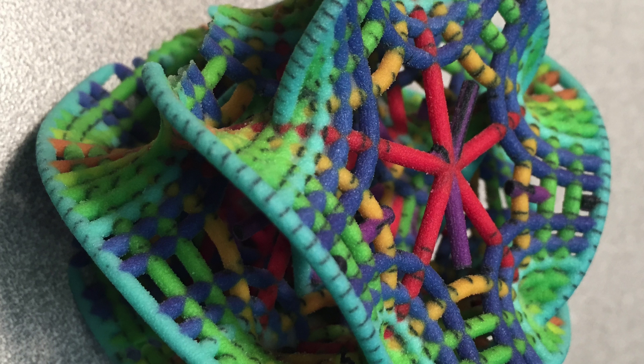So here you see a detail of the Calabi-Yau surface printed in color by Shapeways. I would print it now a little bit larger; you see there are some parts which broke up easily.